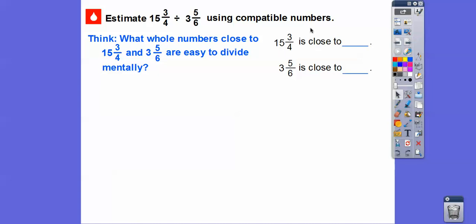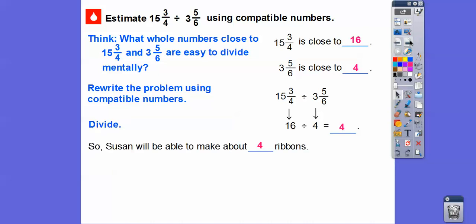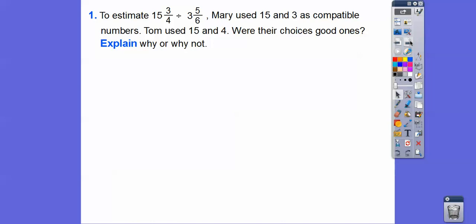So let's estimate 15 and 3/4 divided by 3 and 5/6 using compatible numbers. What whole numbers are close to 15 and 3/4 and 3 and 5/6 that are easy to divide mentally? Well, 15 and 3/4 is close to 16 and 3 and 5/6 is close to 4. We can divide 16 by 4 pretty easily. So let's rewrite the problem using those compatible numbers: 16 divided by 4 is 4. Susan will be able to make about 4 ribbons — maybe a little more or a little less.